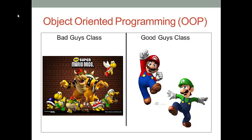We can also apply the same principle to the good guy group. Both Mario and Luigi have something in common. For instance, both of them can run, both of them can use weapons, and both of them can save Princess Peach. So we want to summarize all these common properties or characteristics into a good guy model. Next time when we create a new good guy — for instance, if your Mario got killed — the game will give you a new Mario by making a copy from the good guy model.